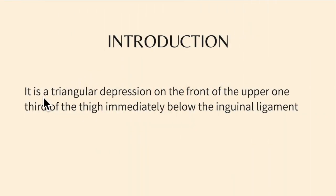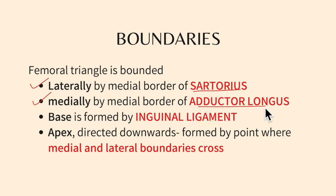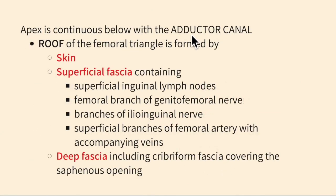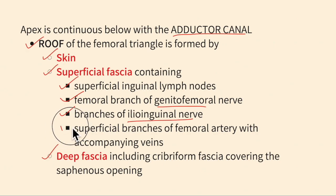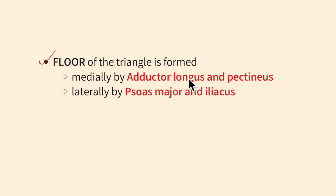To summarize the boundaries: the femoral triangle is bounded laterally by the medial border of the sartorius, medially by the medial border of the adductor longus, with the base formed by the inguinal ligament and the apex directed downwards and forwards. Importantly, the apex is continuous below with the adductor canal. The floor is formed medially by adductor longus and pectineus, and laterally by psoas major and iliacus.